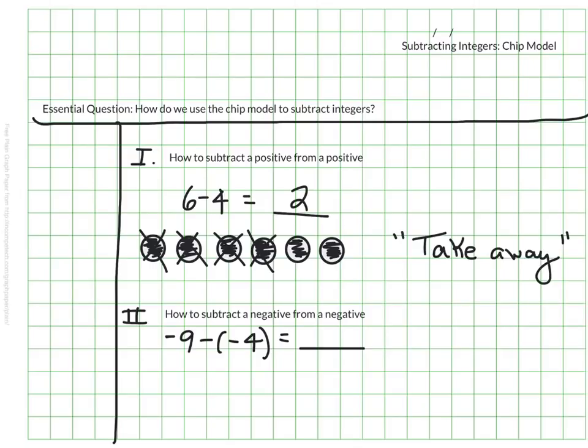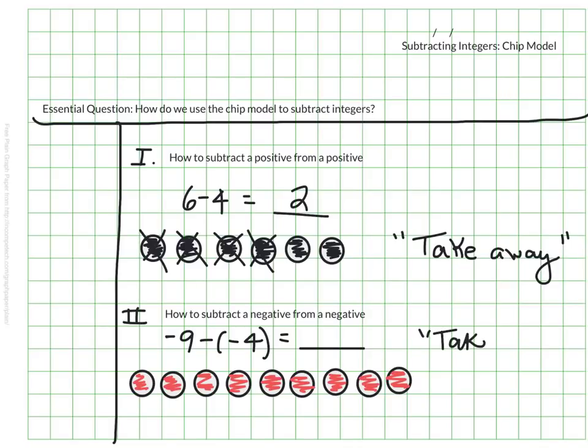So I'm going to need my red chips for this to represent negatives. So I have my 9 red chips, and I want, again, I'm taking away, so that's constantly what I'm thinking about. I'm taking away 4 negative chips, so I want to remove 4 red chips, and I'm just going to use X's to mark that. So I'm going to take that one away, take away, take away, take away. I'm left with 1, 2, 3, 4, 5 red chips, which means it's a negative 5. So negative 9 minus negative 4 is actually a negative 5.